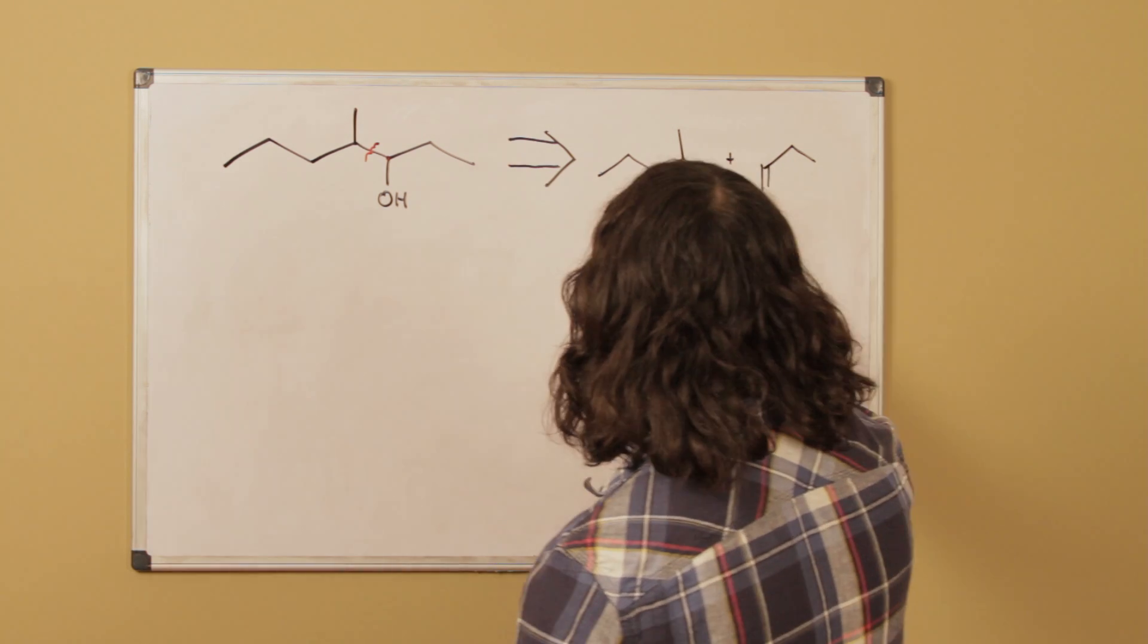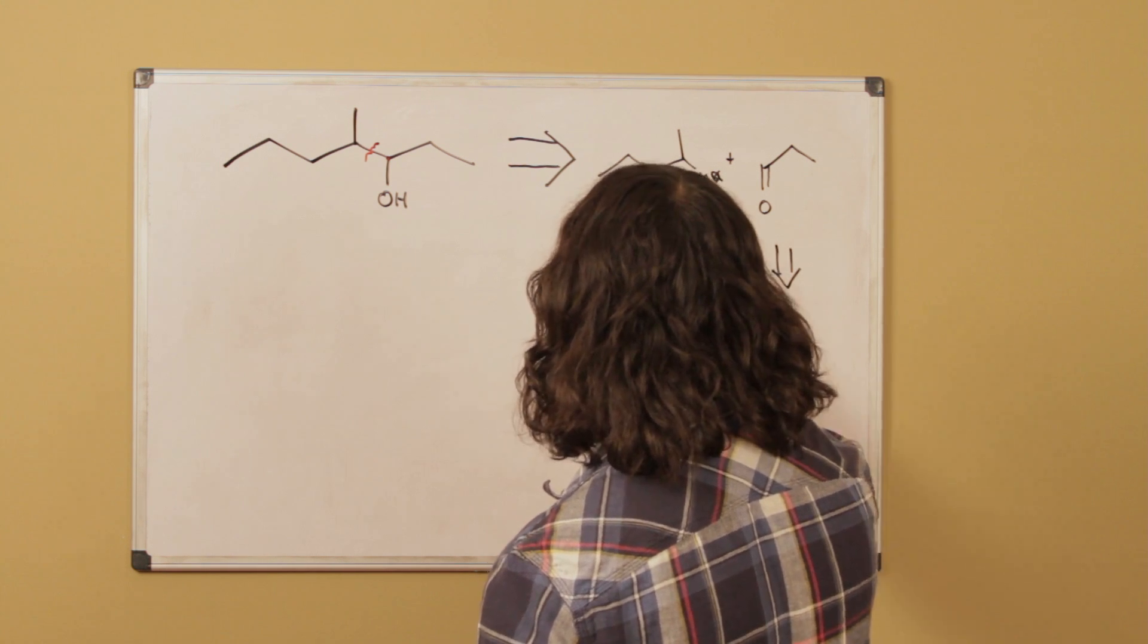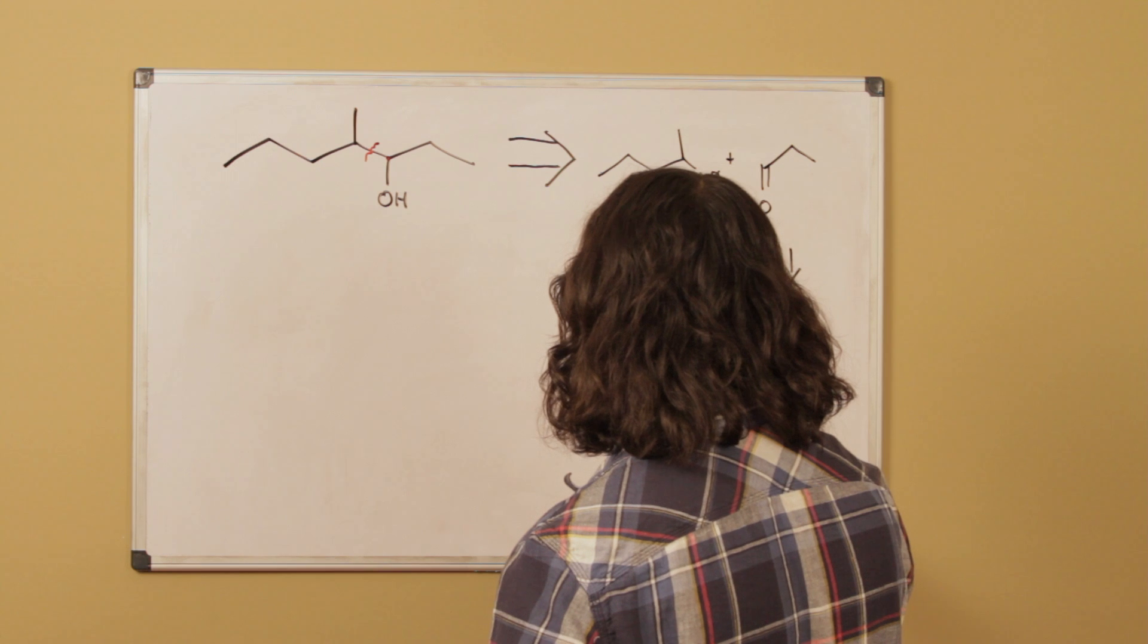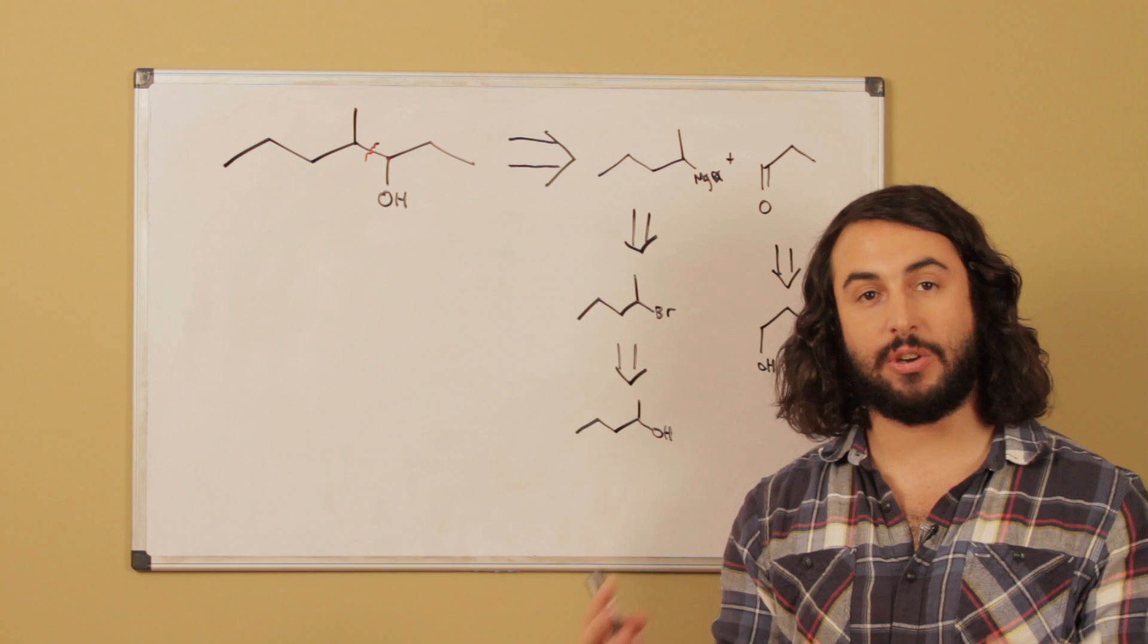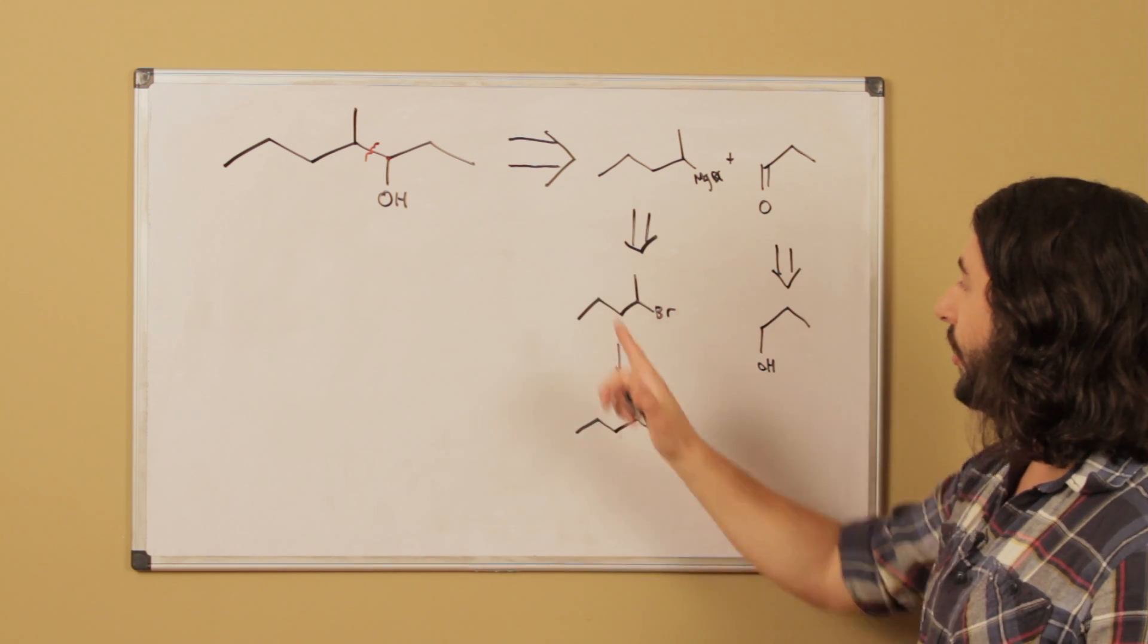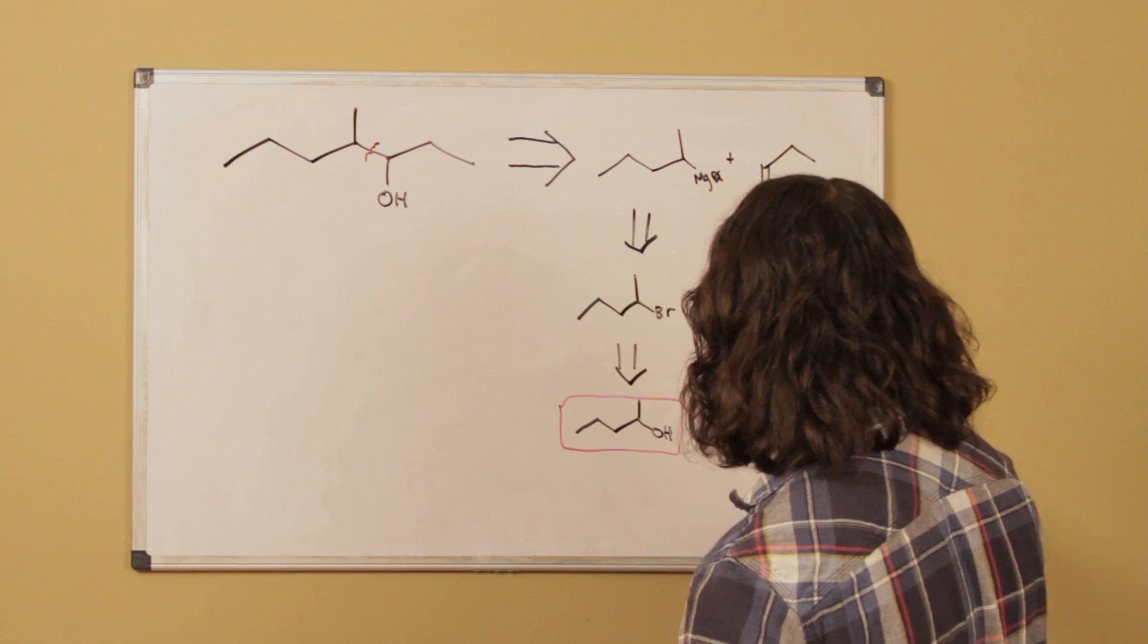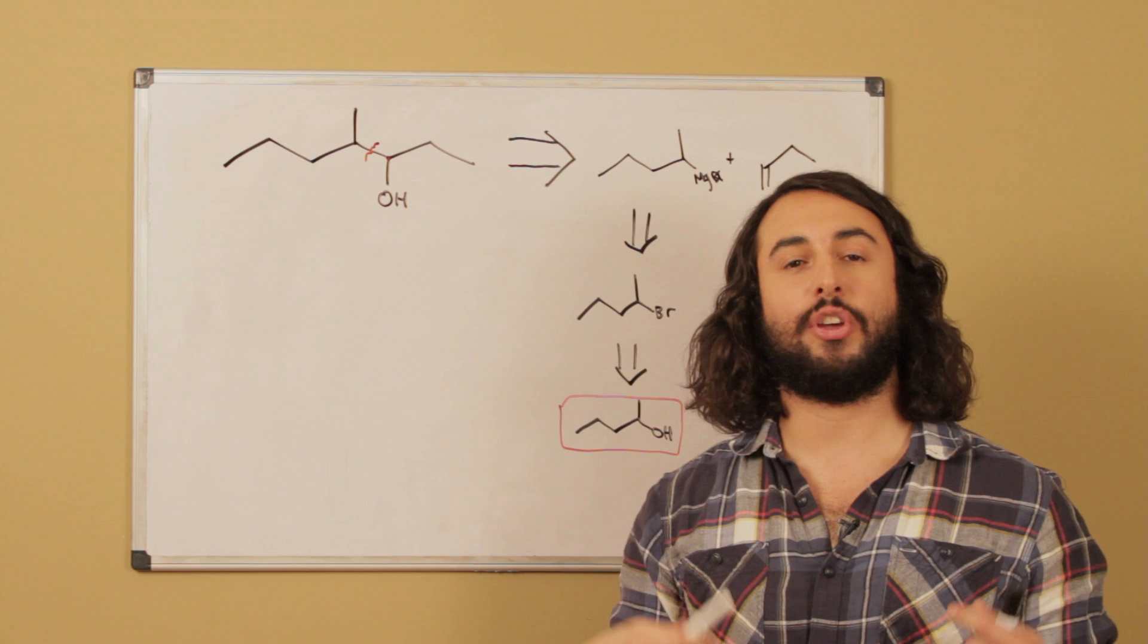And then from here we know that this can have come from the alkyl bromide, which can in turn have come from the alcohol. These again are valid retrosynthetic steps because there is some reaction that we know that will induce the transformation in the forward direction. So now we have our starting material. This is a one, two, three, four, five carbon alcohol. This is a three carbon alcohol. So these meet the criteria that we stated about valid starting materials.